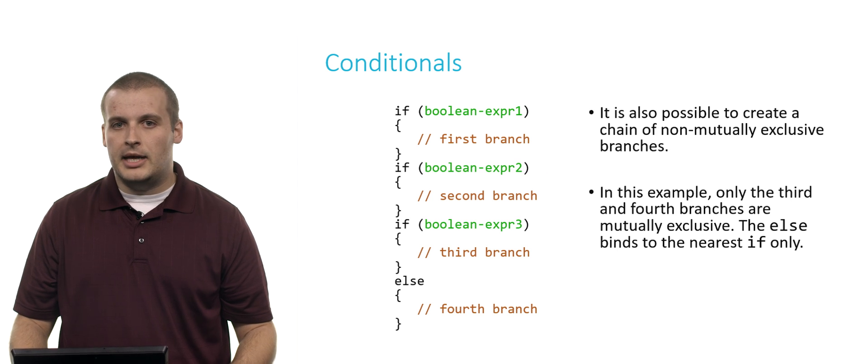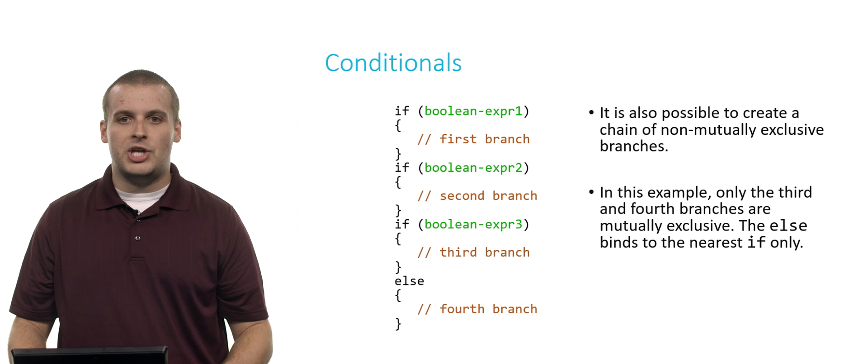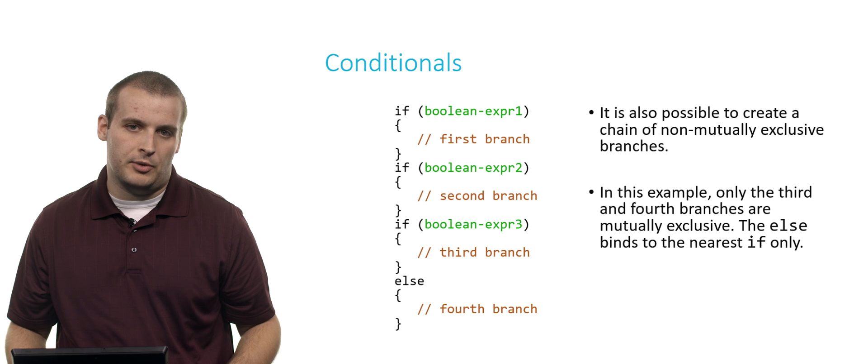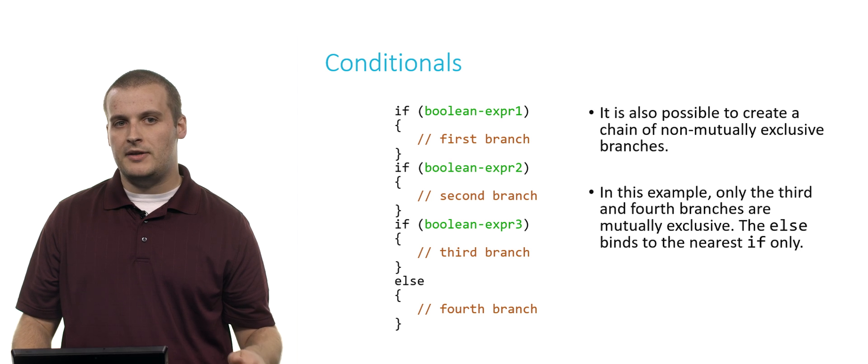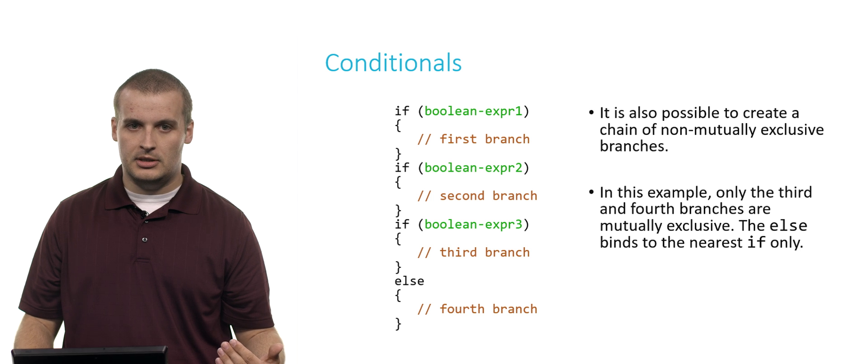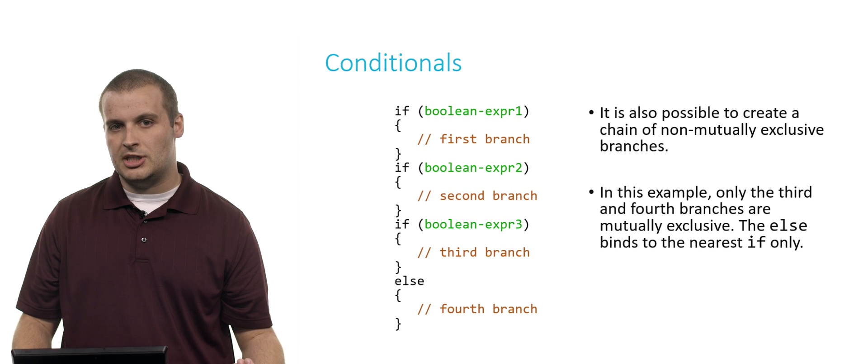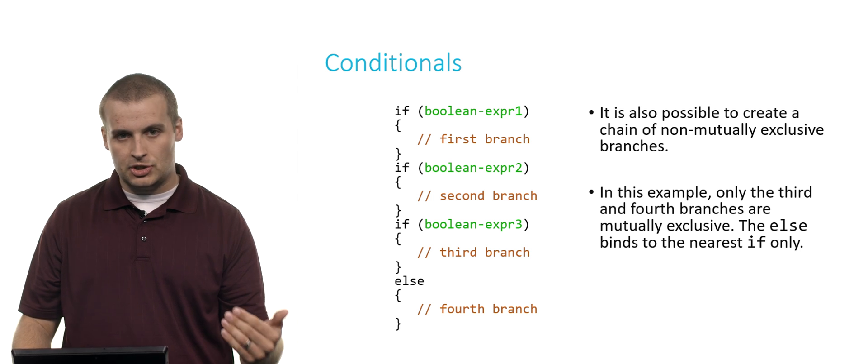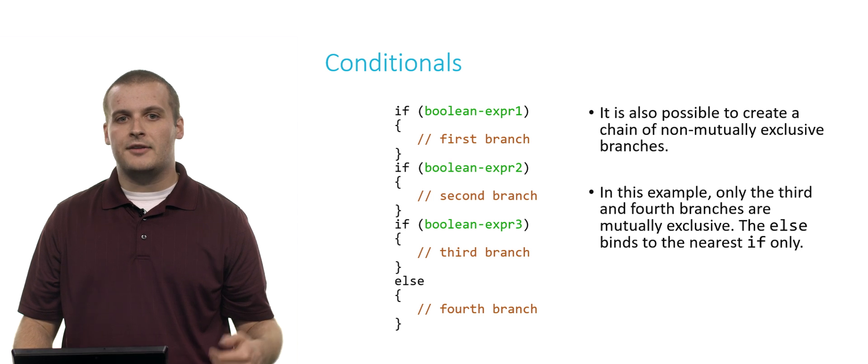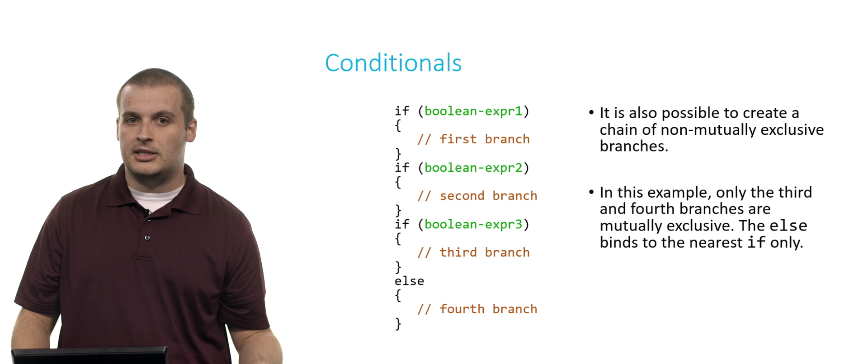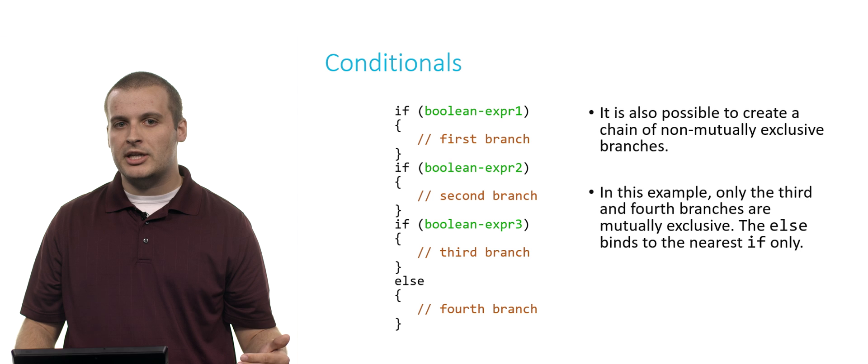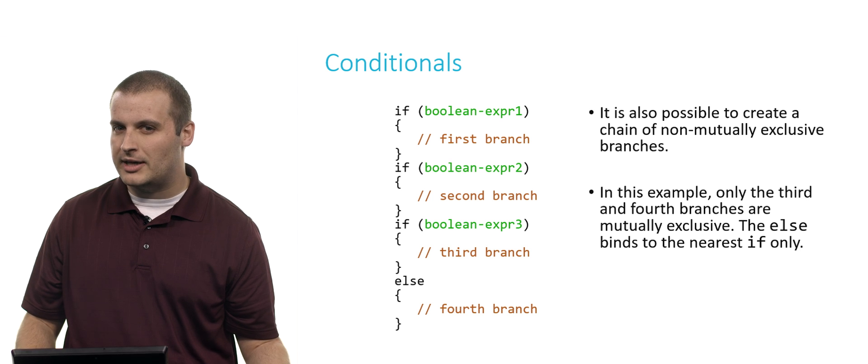It is possible, though, and sometimes very useful, to create a chain of not mutually exclusive branches. In this example, only the third and fourth branches are mutually exclusive. It could be that you could satisfy the first condition, and you could satisfy the second condition, and you could satisfy the third condition, in which case you would go down the first branch, then you would go down the second branch, then you would go down the third branch. Or perhaps you satisfy the first condition and the second condition, but you don't satisfy the third condition. In this case, you go down the first branch and the second branch, and then the fourth branch.